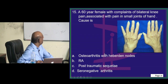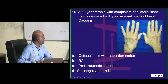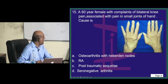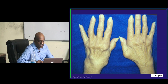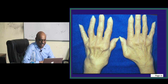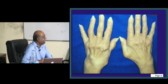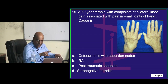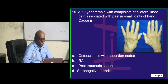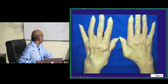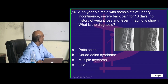A 60-year-old female complains of bilateral knee pain associated with pain in the small joints of the hand with the deformity shown. What is your diagnosis? Nasiya Hassan proposes rheumatoid arthritis, Vanaparthi Vanishri agrees — absolutely right, rheumatoid arthritis.